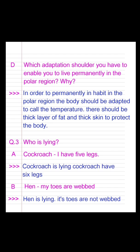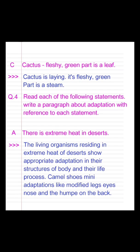Question A: Cockroach says - I have 5 legs. Answer: Cockroach is lying. Cockroaches have 6 legs. Question B: Hen says - My toes are webbed. Answer: Hen is lying. Its toes are not webbed. Question C: Cactus says - My fleshy and green part is a leaf. Answer: Cactus is lying. Its fleshy and green part is a stem.